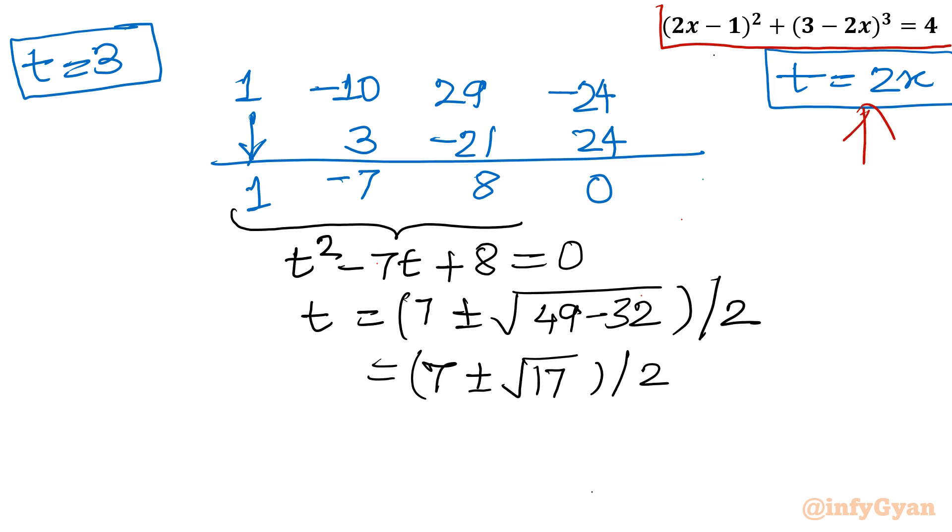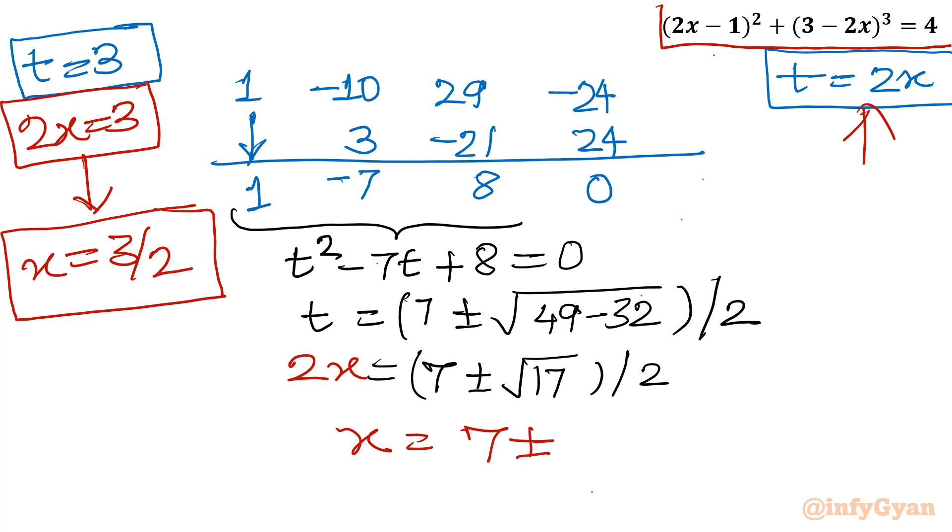And our question is based on x. So what is relation between t and x? t = 2x. Let me write here 2x. And this value is also 2x = 3. So from here we can conclude x = 3/2. First solution. And from here I will write x = (7 ± √17)/4.